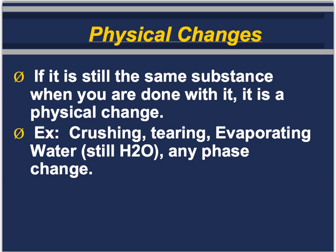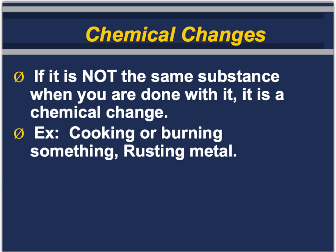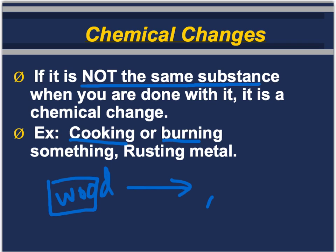A physical change is one where you still have the same substance when you're done. Examples include crushing, tearing, and evaporating — and any phase change. If an ice cube melts into water, it's only a physical change because it's still H2O; it's just in the solid phase and then the liquid phase — same chemical formula. A chemical change is when you do not have the same substance when you're done. Examples include cooking, burning, and rusting of metal. If I burn a piece of wood, I get charcoal and CO2 gas — it turns into different things than it was originally.